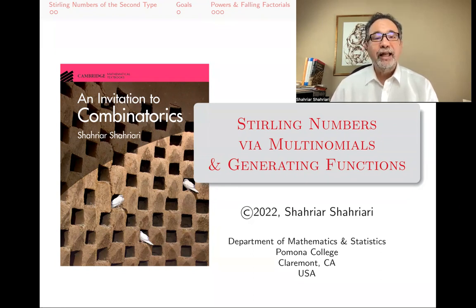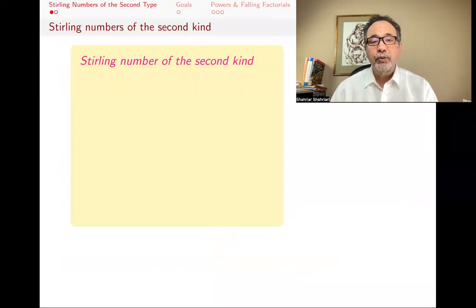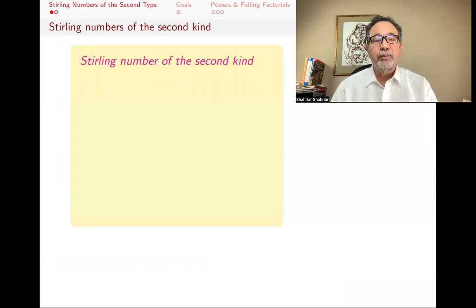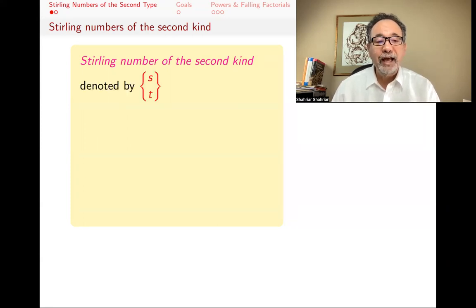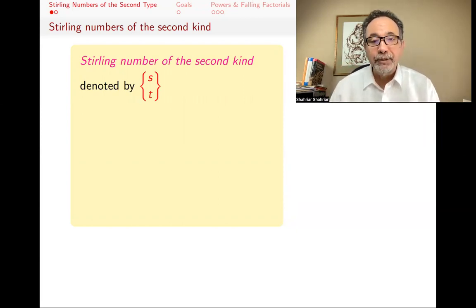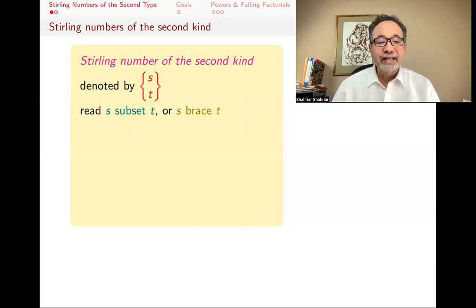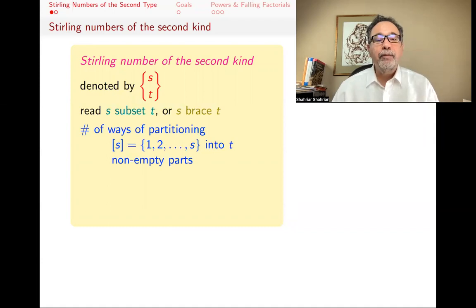This is the third lecture in a series on Stirling numbers of the second kind. Stirling numbers of the second kind are denoted S brace T — also read as S subset T. If you have never seen them, please watch my first video where I describe what they are. S brace T is the number of ways of partitioning a set with S elements into T non-empty parts.